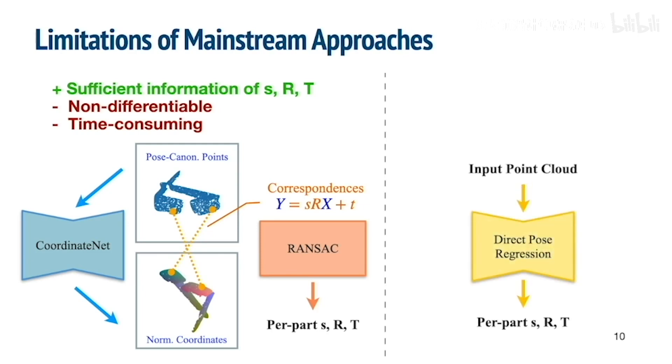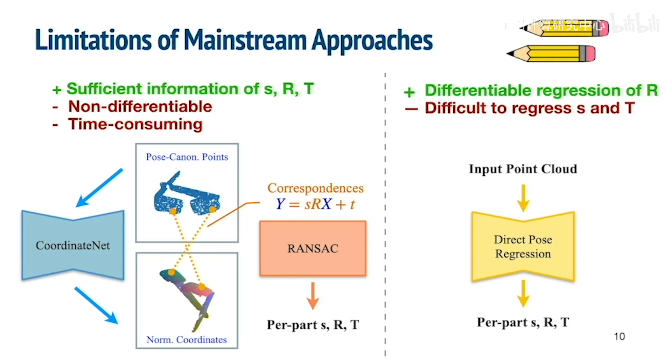Another way is to directly regress per-part poses. However, this approach can't regress scale and translation accurately due to ambiguity caused by occlusions. For example, for these pencils, it's hard to directly regress their centers when their two ends are occluded.